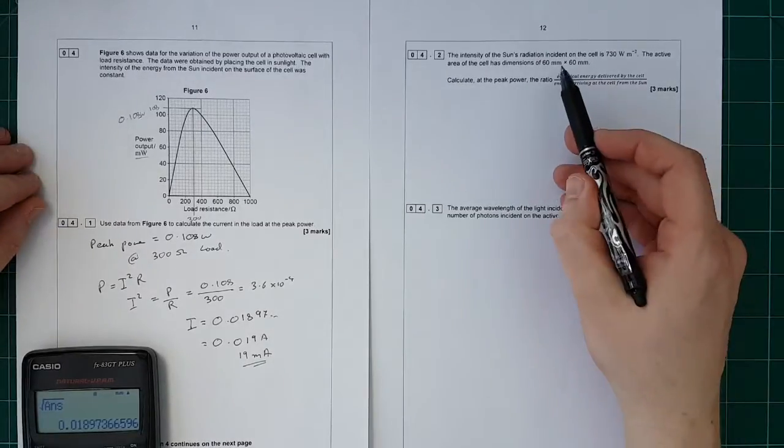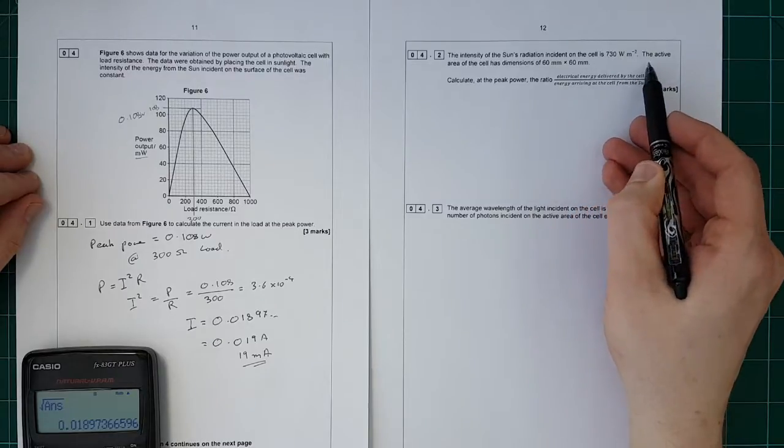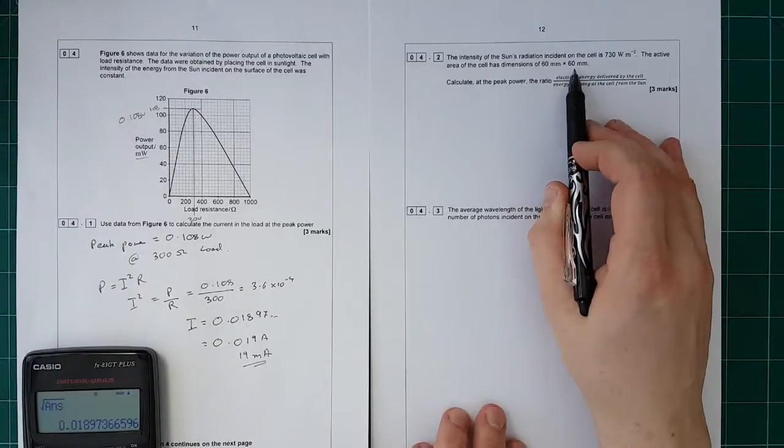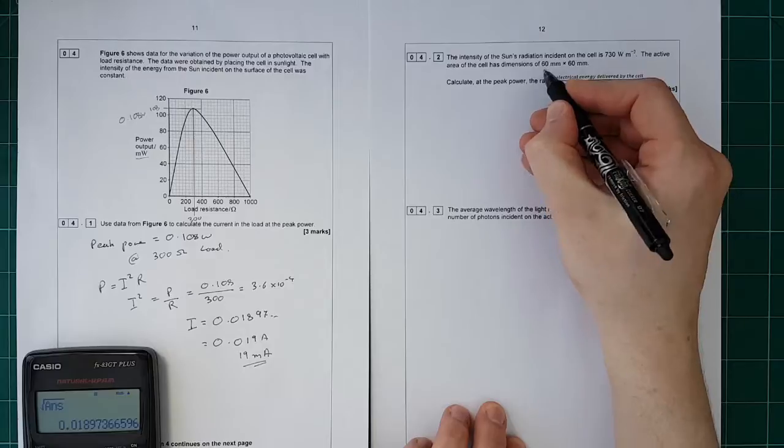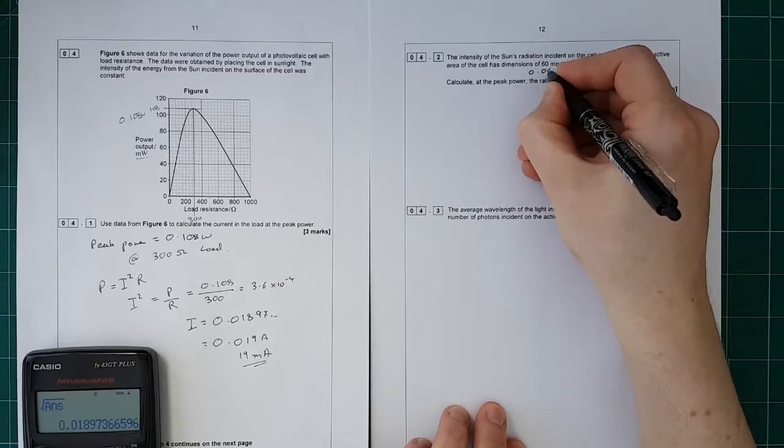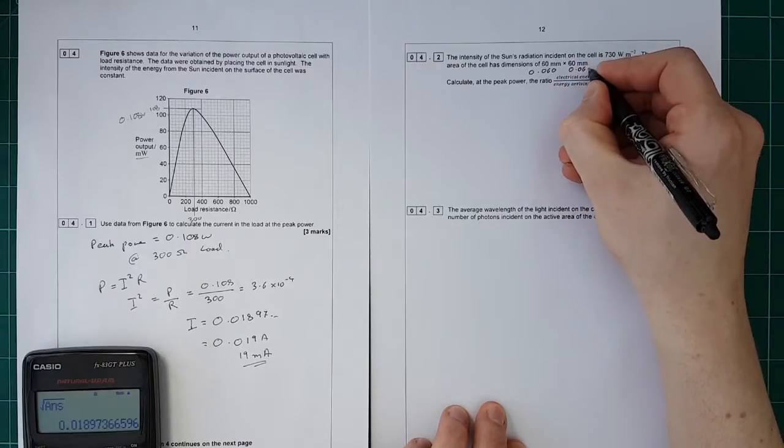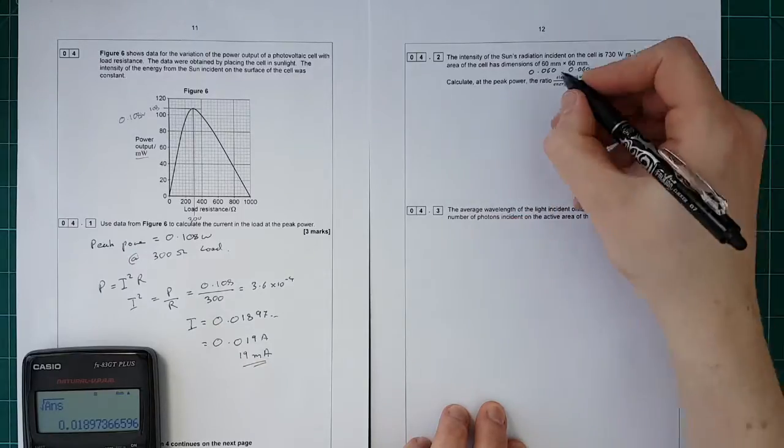The intensity of the sun's radiation incident upon the cell is 730 watts per meter squared. The active area of the cell has dimensions 60 millimetres by 60 millimetres. When we see this in the question, the first thing to do is convert these into meters: 0.060 and 0.060 metres.